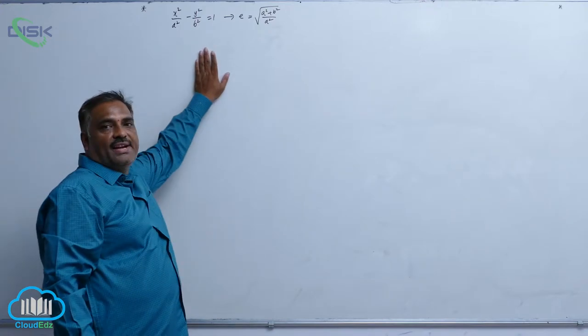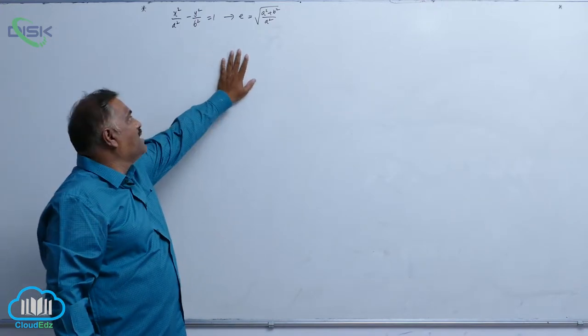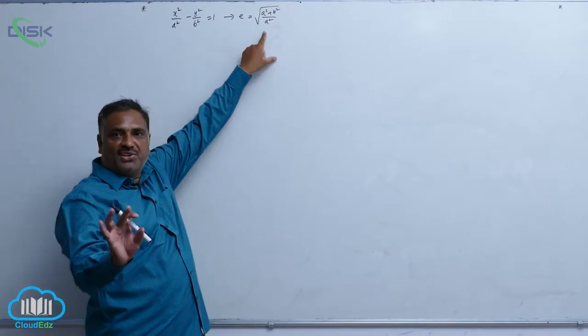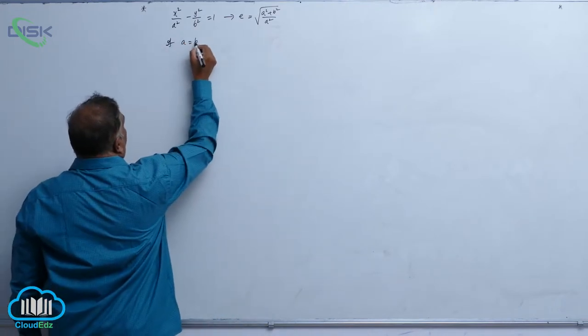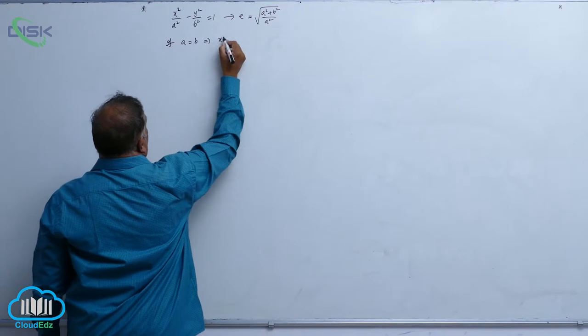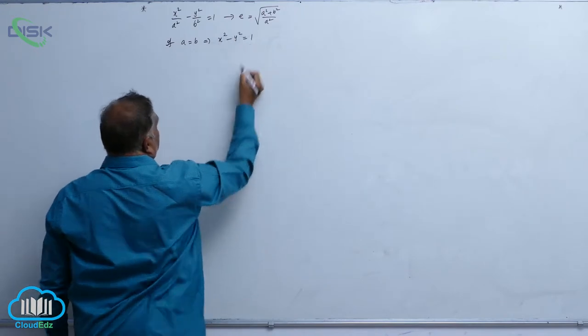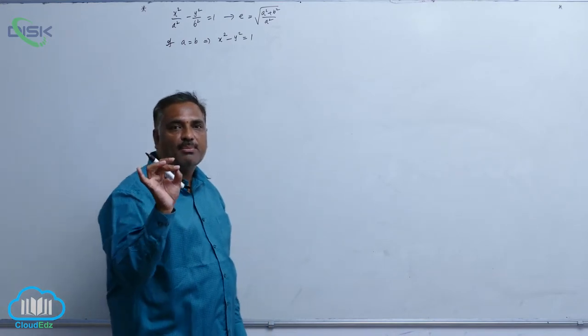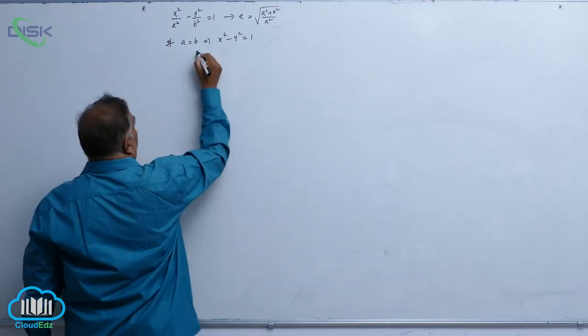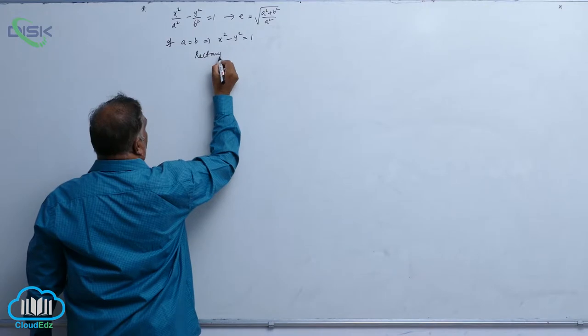No doubt this is a standard hyperbola with specified eccentricity. Suppose if a is equal to b, automatically the equation will become x square minus y square equal to 1. This is called rectangular hyperbola.